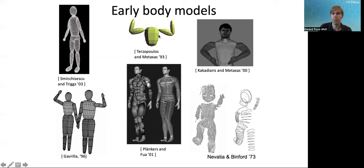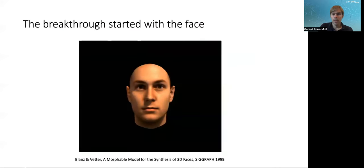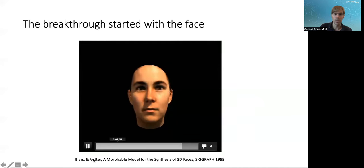Then the work by Plankers and Fua, which they had these spheres, like these implicit spheres that would approximate the shape of the human body. But none of these models looked really realistic, like a real person. The breakthrough really started with the face.